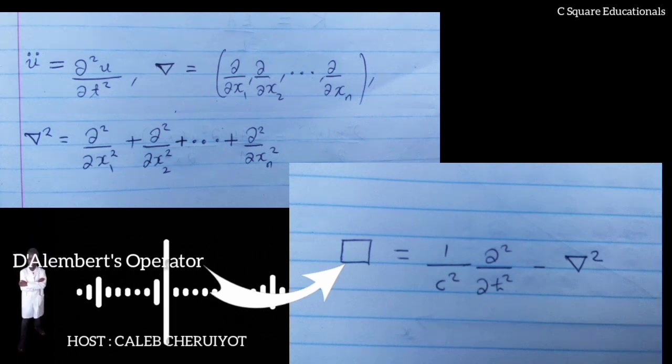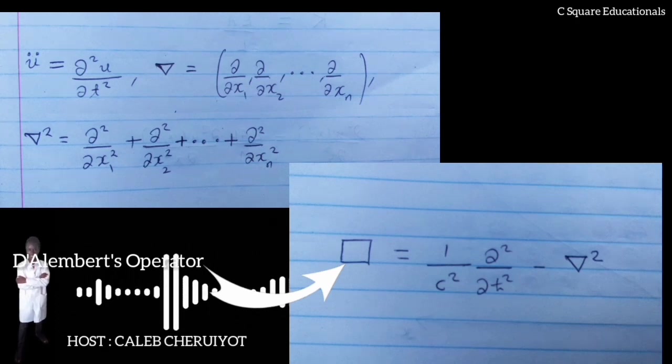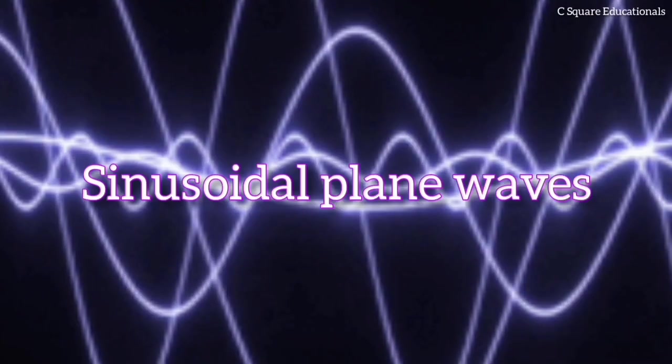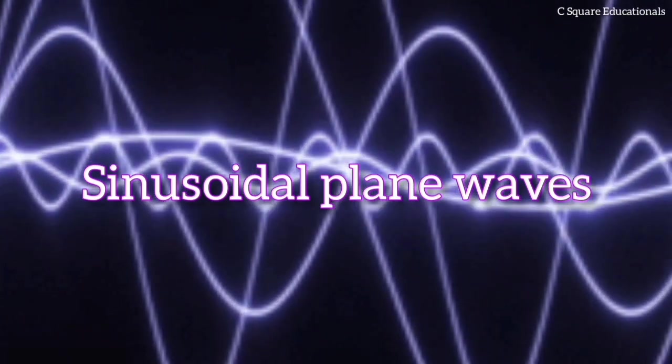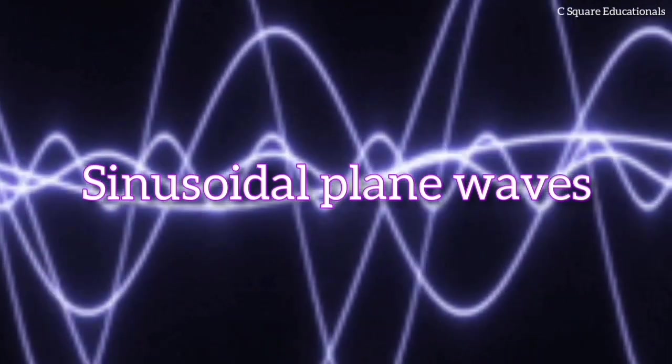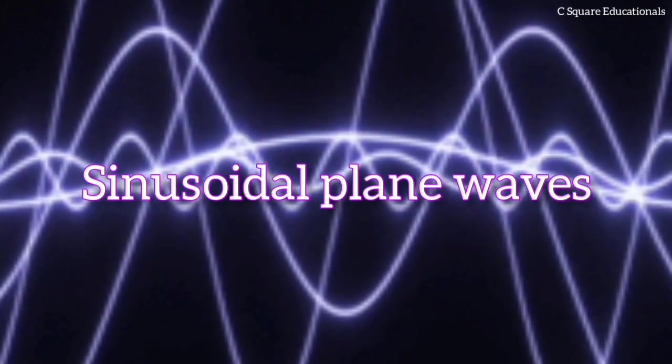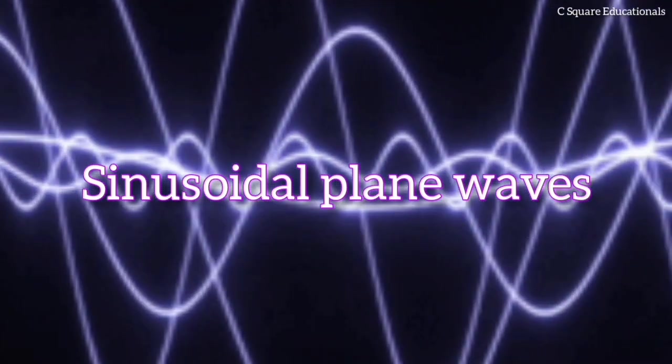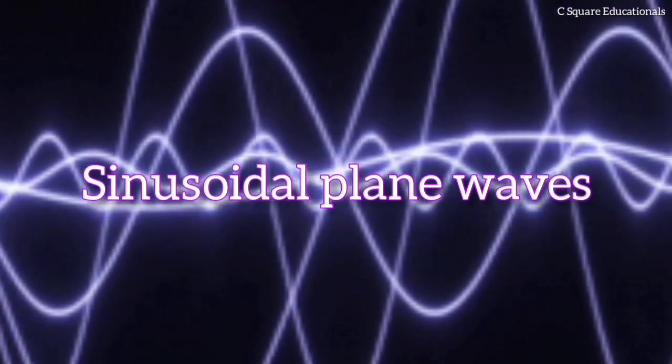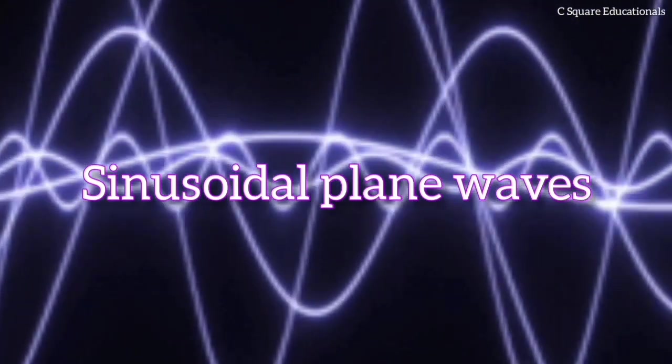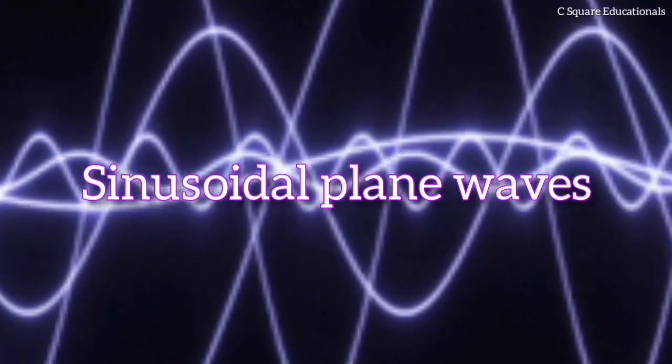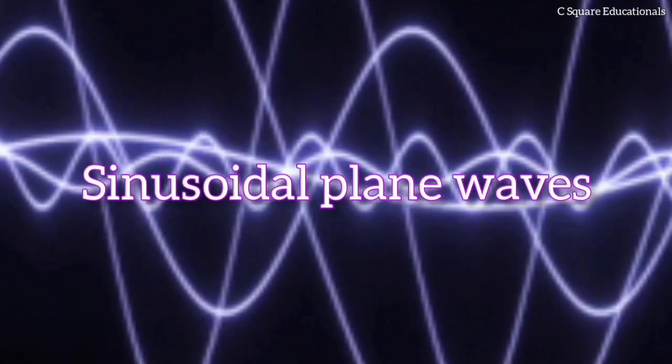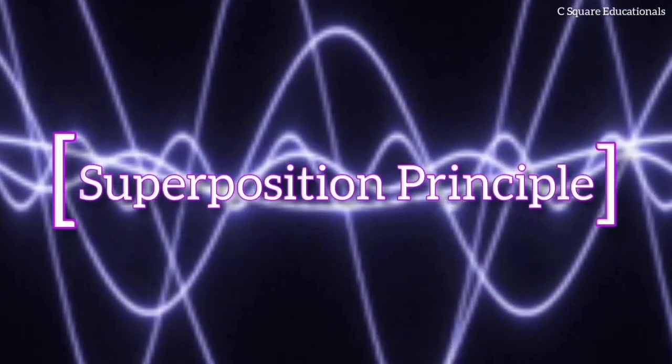A solution of this two-way wave equation can be quite complicated, but it can be analyzed as a linear component of simple solutions that are sinusoidal plane waves with various directions of propagation and wavelengths, but all with the same propagation speed c. This analysis is possible because the wave equation is linear and homogeneous, so that any multiple of a solution is also a solution, and the sum of any two solutions is again a solution. This property is called the superposition principle in physics.